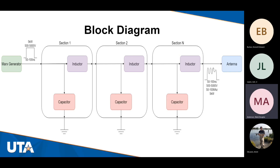In our block diagram, there are three major sections in the middle. We identify a section as an inductor-capacitor pair, and through research we have decided to ideally target a 24-stage design toward the end. On the left, the input comes from the Marx generator, which provides that square pulse. Through our NLTL, we will be producing somewhere between 50 to 100 megahertz of oscillations coupled to a 50 to 100 ohm antenna.